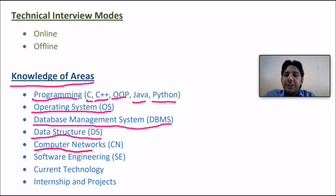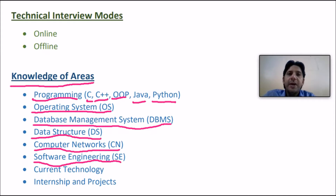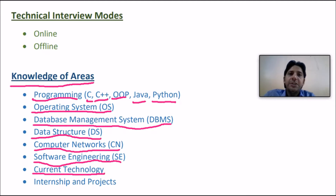The next area is computer networks — you must know the OSI model, TCP/IP model, their layers and the functioning of those layers. Then software engineering, covering different case studies, types of testing performed, and how use cases are taken. You should also have an idea about current technologies like IoT, big data, and cyber security. Finally, you must have knowledge of your internships and projects.